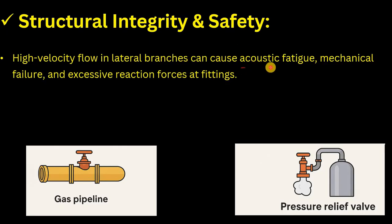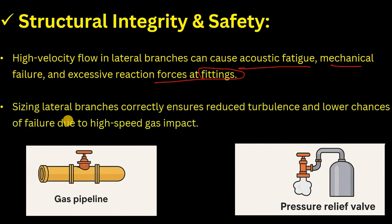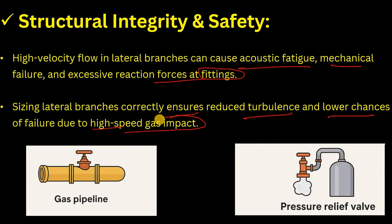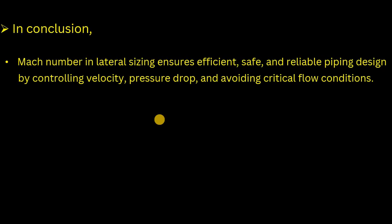High velocity flow in lateral branches can cause acoustic failure, mechanical failure, and excessive reaction forces at fittings. Sizing lateral branches correctly ensures reduced turbulence and lower chances of failure due to high-speed gas impact. When doing line sizing for gas, always check the Mach number — if it approaches or exceeds one, acoustic and mechanical failure can damage fittings and ultimately the plant.